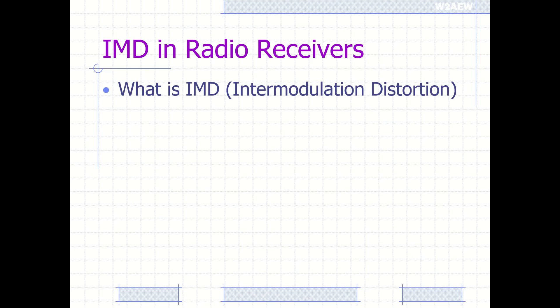What is intermodulation distortion, or IMD? It refers to the mixing of multiple input signals inside a receiver, often due to nonlinearities in the receiver, whether in the mixer or IF amplifier stages.